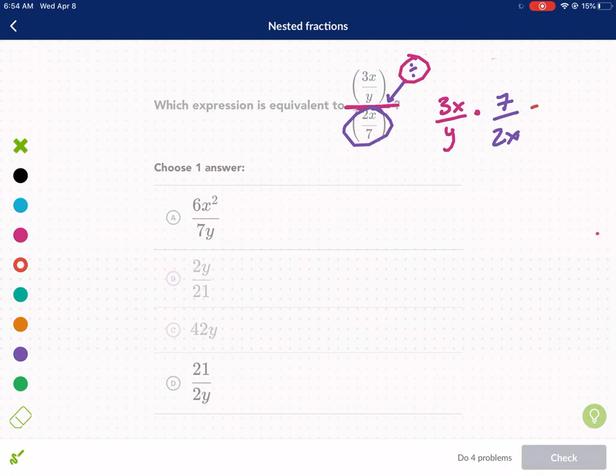And now I'm ready to simplify by multiplying the top times the top, bottom times the bottom. And I get 21x over 2xy.